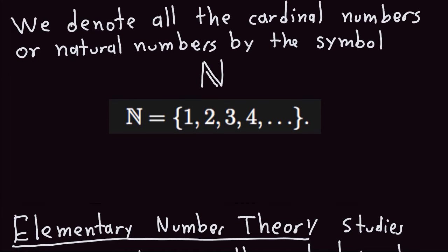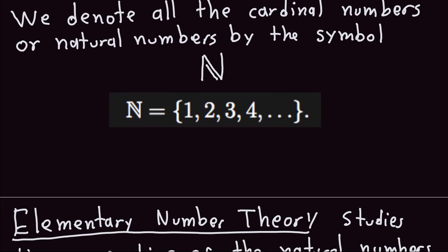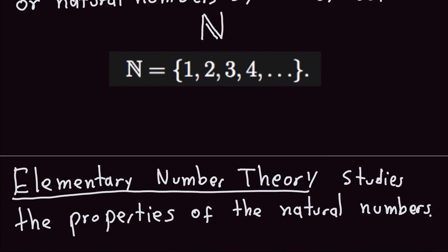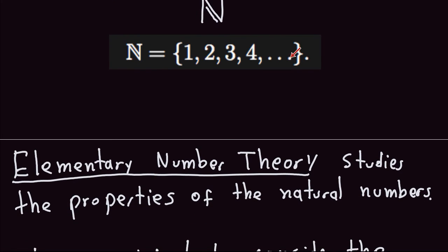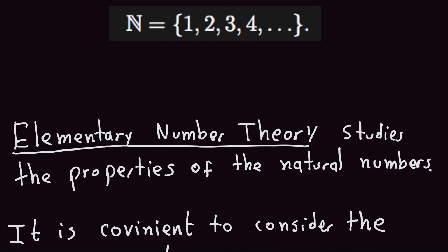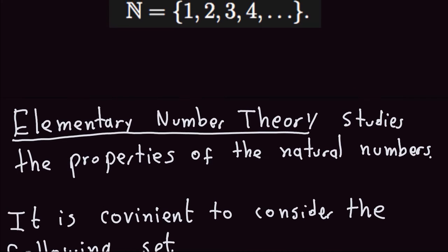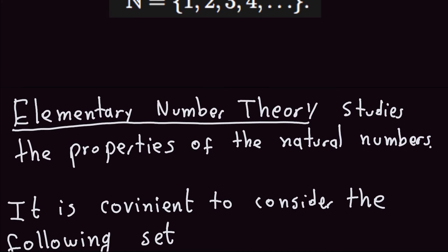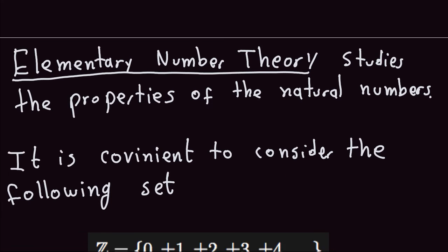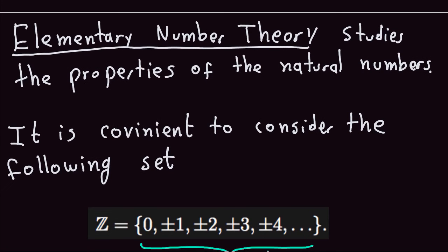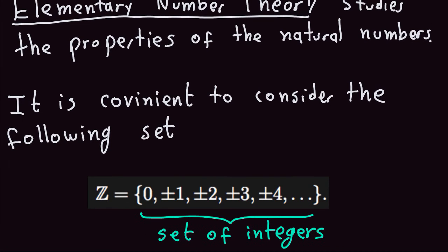What is elementary number theory? Elementary number theory is studying the properties of these numbers — one, two, three — the numbers that we use for counting. When we talk about these numbers, it's also convenient to consider another set of numbers, which we will call the integers.